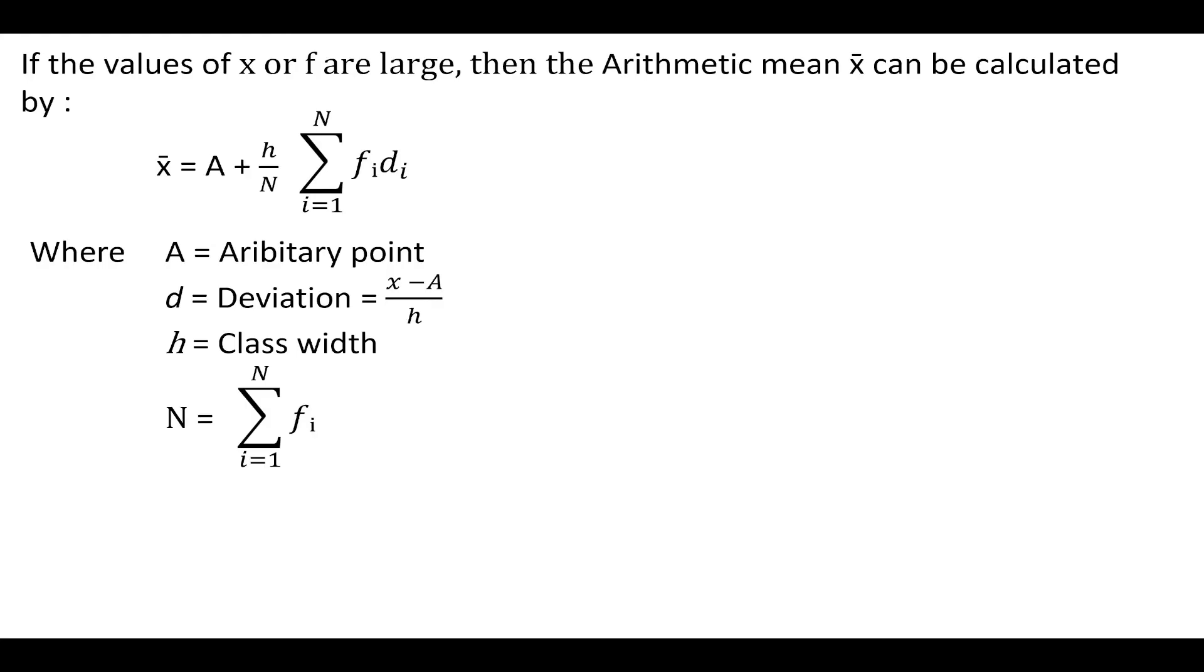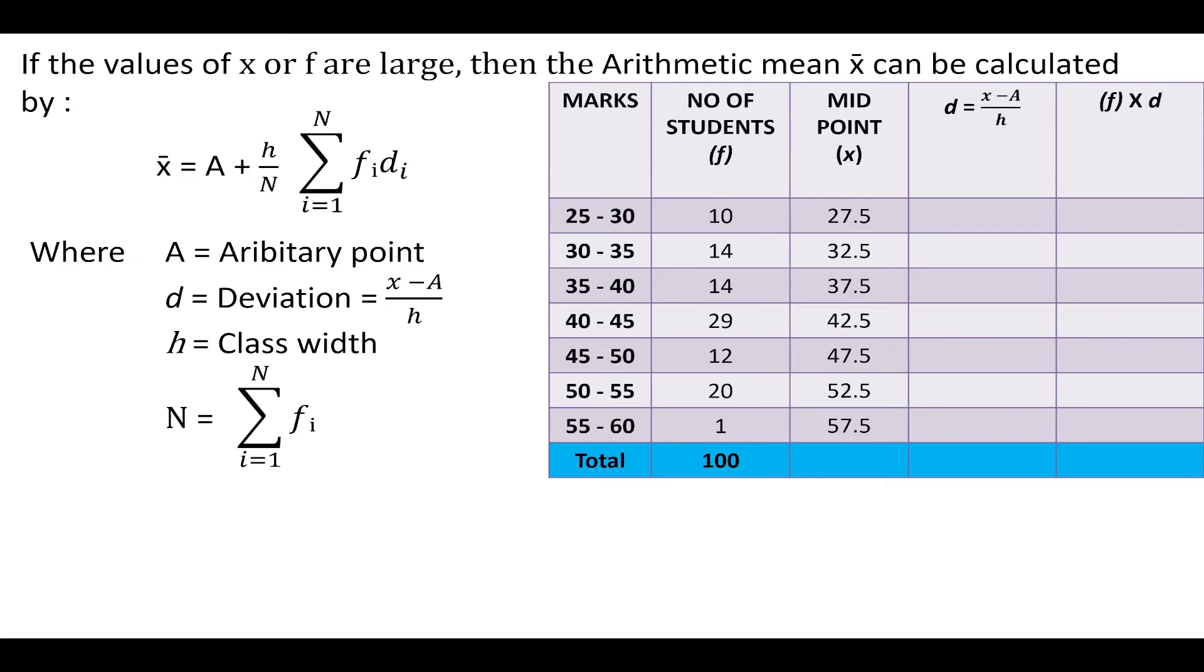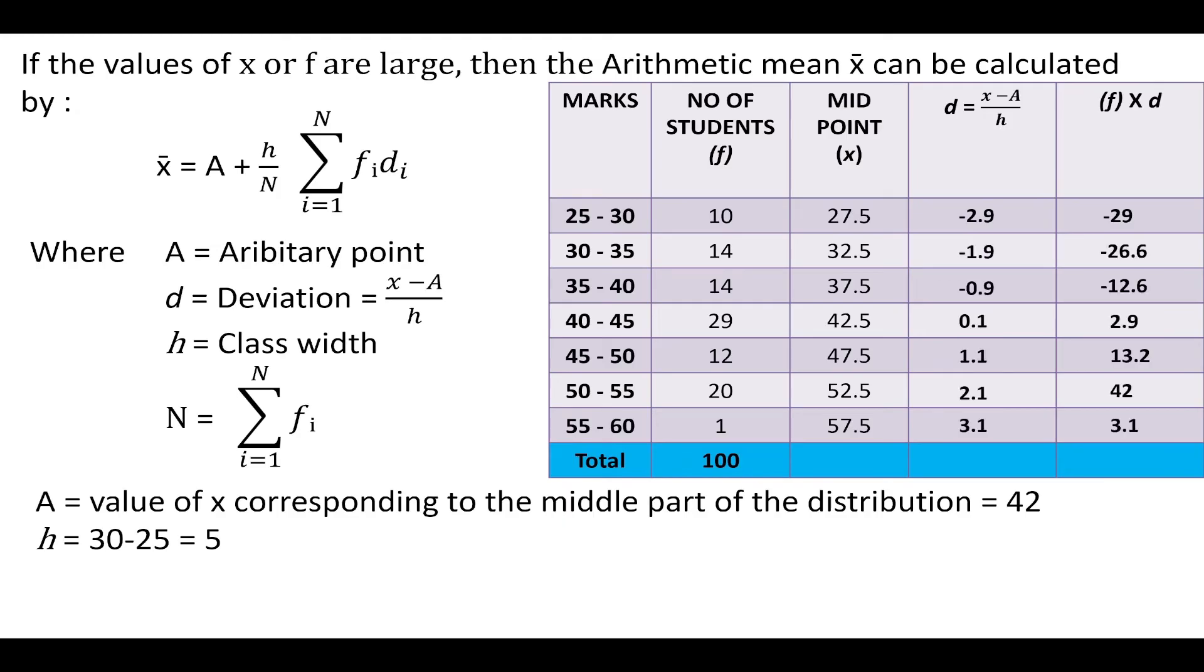Now let us understand this by taking a small example. Here the value of A will be the value of x corresponding to the middle part of the distribution, that is 42. And the class width will be 30 minus 25, that is 5. So we get the value of deviation as minus 2.9 and the product of deviation and the frequency will be minus 29. Similarly, we will get all other values and the summation of f into d will be minus 7. So replacing all these values in the formula will get the value of arithmetic mean as 41.65.